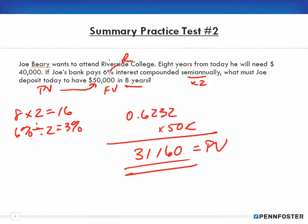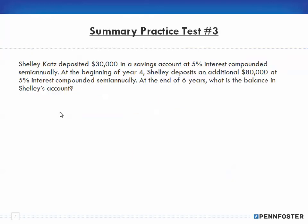With word problems, remember: some information is directly related to the problem, some has nothing to do with the problem, and some needs to be modified. The $40,000 here — we only needed that for comparison purposes. It's not actually part of the calculation.